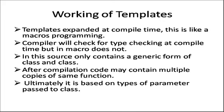The working of a template: templates are expanded at compile time. When we are compiling the template class, every function can be assigned different memory according to the data type sent by the main function object. If you assign integer and float — creating two objects — then two memory spaces are allocated for one function in the template class. This is similar to macro programming, where a macro function's code is replaced at the calling location. The compiler will also check for type checking at compile time.